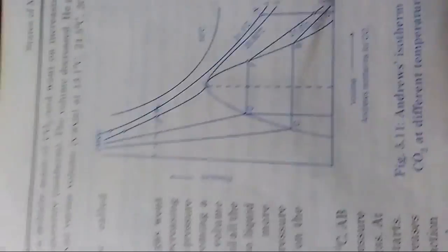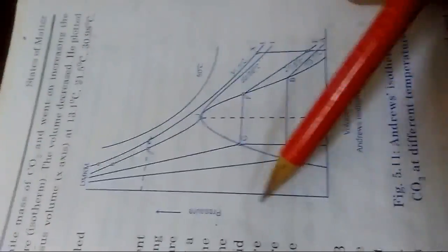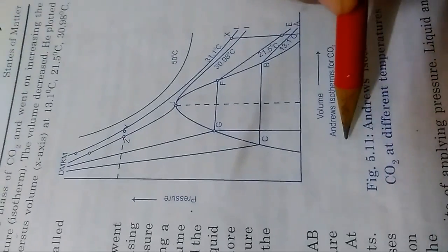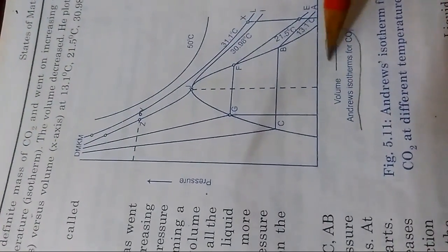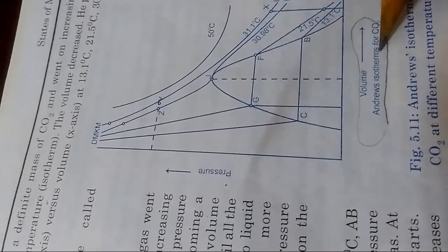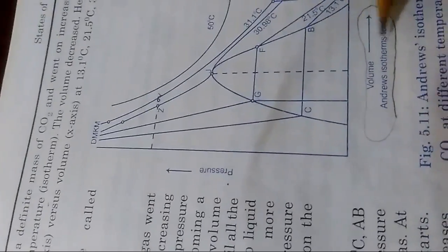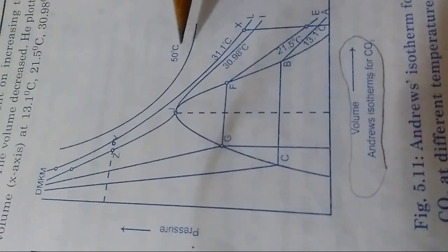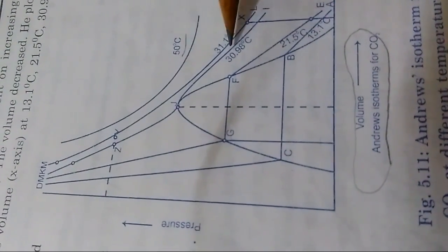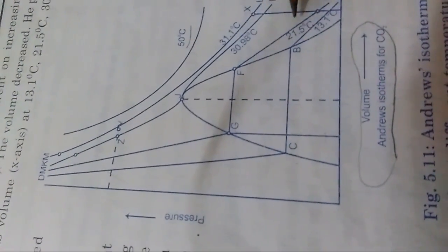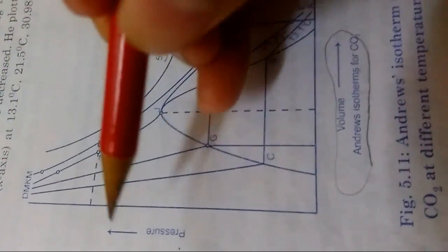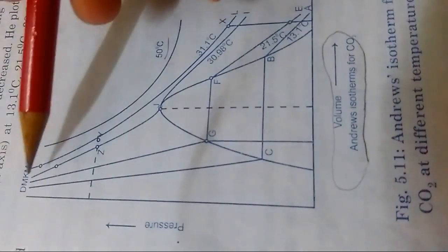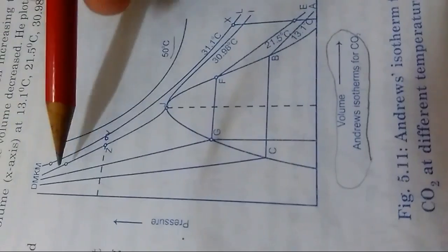This graph was introduced today in class. This is a relation between pressure and volume. This is Andrews' isotherm, which means at constant temperature they would perform this experiment. They found results at different temperatures - 50 degrees, 31, 30.9, and 21 degrees.